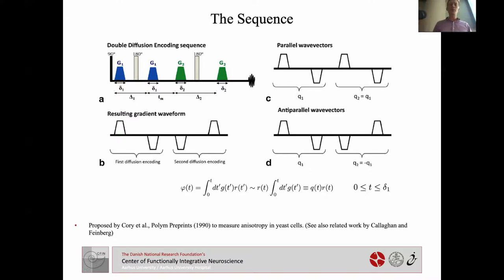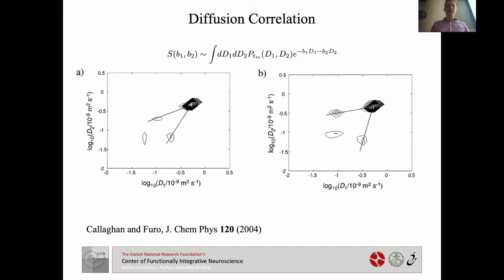This sequence was originally proposed by Corey et al. to measure the anisotropy of yeast cells — I'll come back to that shortly. The basic idea of the sequence is a correlation experiment, and indeed Callaghan and Furrow used this kind of idea to look at exchange between different local environments.